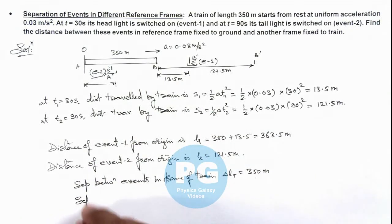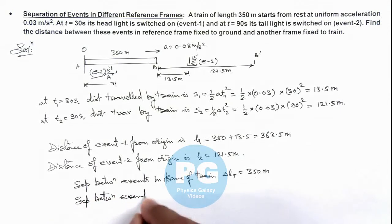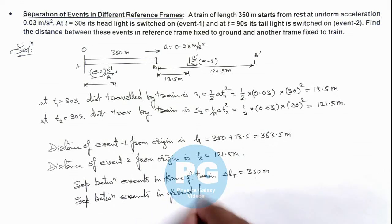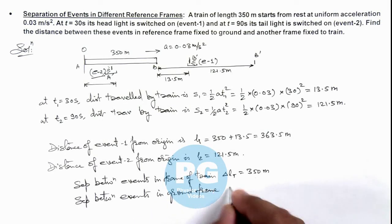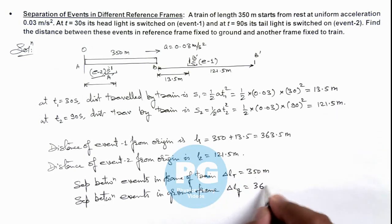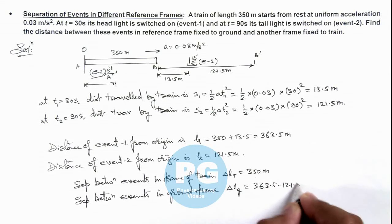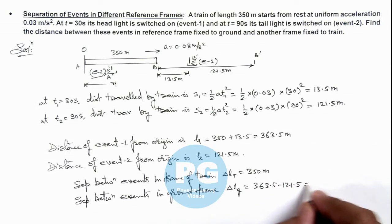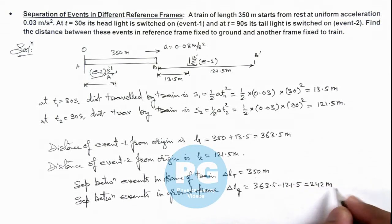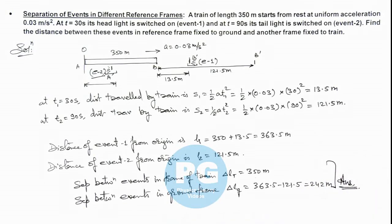And if we calculate the separation between events in the ground frame, with respect to the ground we can directly write delta L_g equal to 363.5 minus 121.5, which is equal to 242 meters. So these are the final results of this problem.